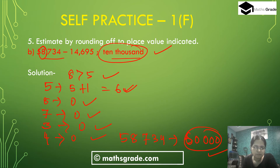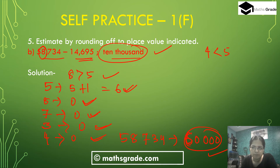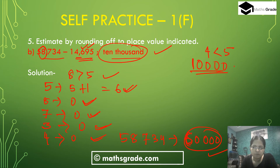Now we round 14,695 to the nearest 10,000. The thousands digit is 4, and 4 is less than 5. So we do not add 1 to the ten-thousands digit; just write it as it is, which is 1. The thousands digit 4 changes to 0, the hundreds digit 6 changes to 0, the tens digit 9 changes to 0, and the units digit 5 changes to 0. So 14,695 rounded to the nearest 10,000 is 10,000.